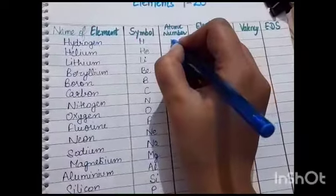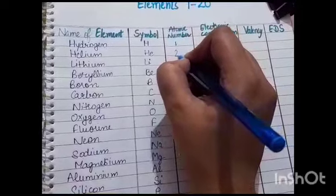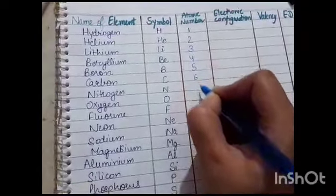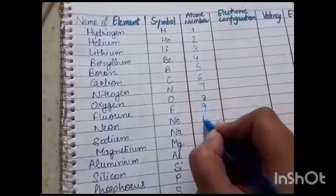The atomic number for hydrogen is 1. For helium, it's 2. Similarly, 3, 4, 5, 6, 7, 8, 9, 10.